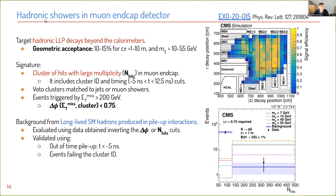The next search looks for hadronic showers in the muon-endcap detector — a completely different final state, several meters away. In this volume in the muon detector, we look for a cluster of hits with large multiplicity. To ensure this is signal-like, there are cluster ID requirements and timing cuts — it must be on-time with the bunch crossing. To reduce backgrounds, there is a veto on clusters matched to jets from near showers, and the search uses events triggered by a missing-ET trigger with missing ET aligned with the cluster.